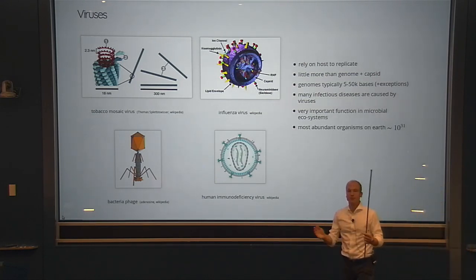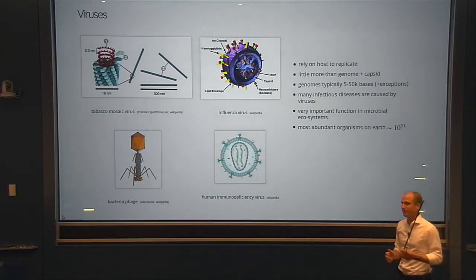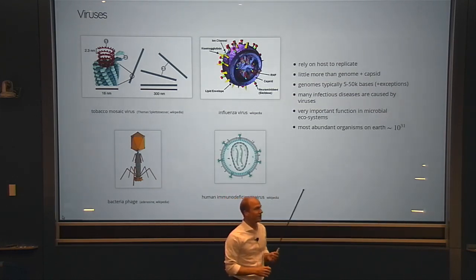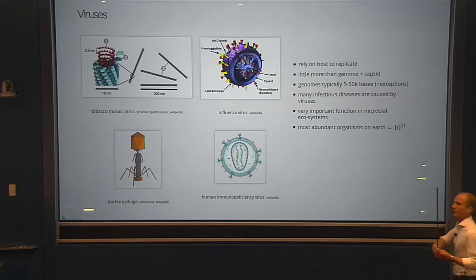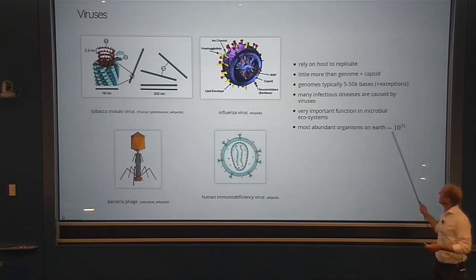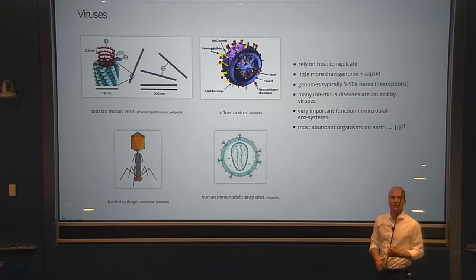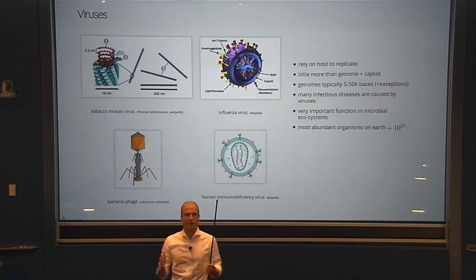A large number of infectious diseases are caused by viral pathogens. Many people think of viruses as nasty things that make us sick, but one should keep in mind that they have a very important role in microbial ecosystems and are responsible for a large fraction of biomass turnover in the oceans. They are the most abundant organisms on the planet — on the order of 10^31 viruses, basically 10 viruses for every cell.